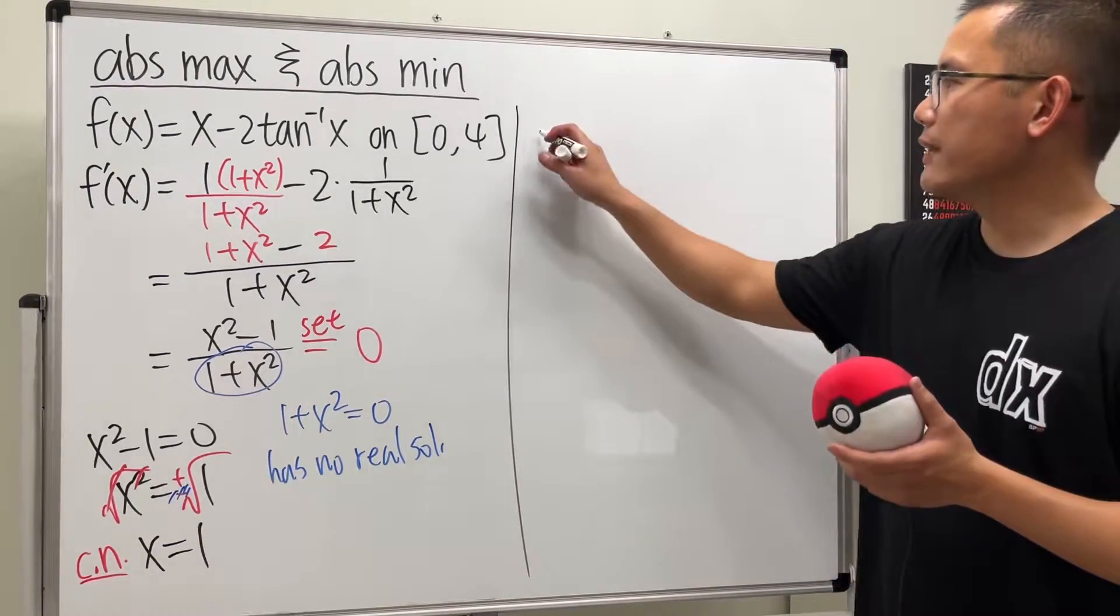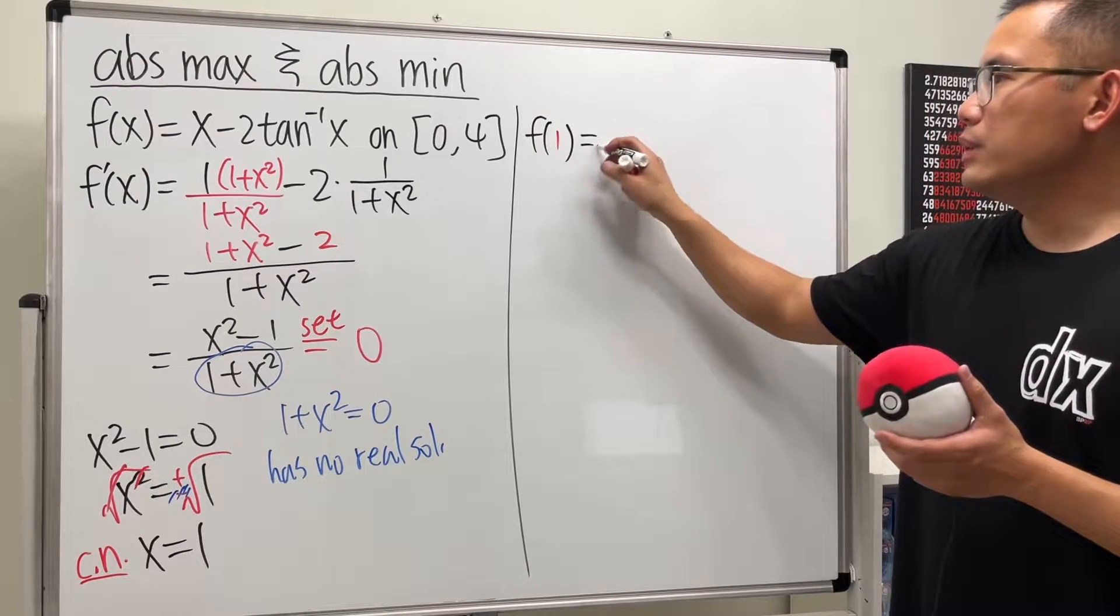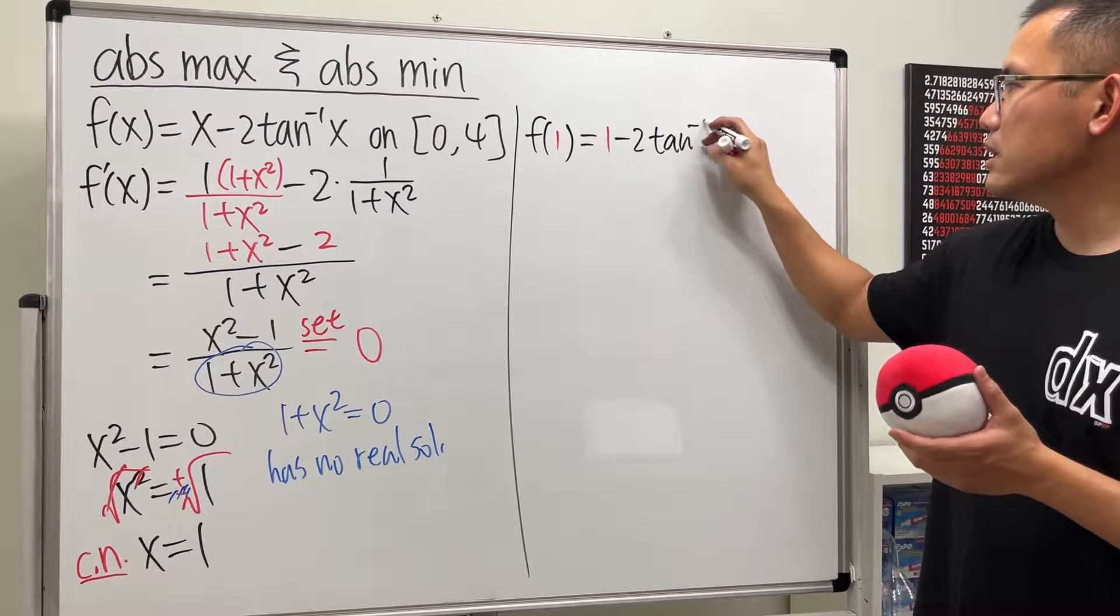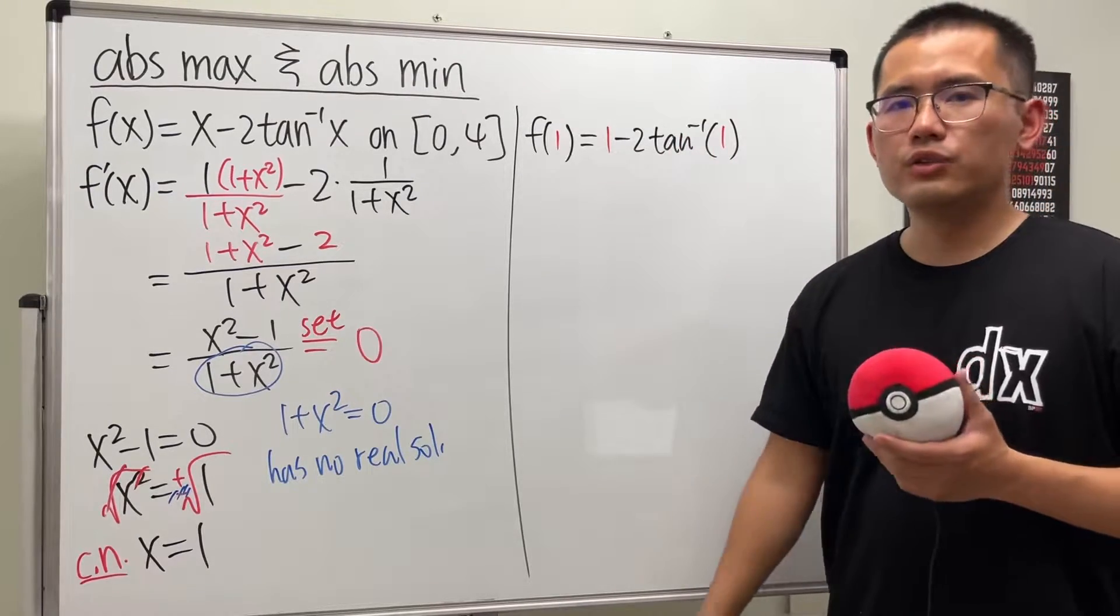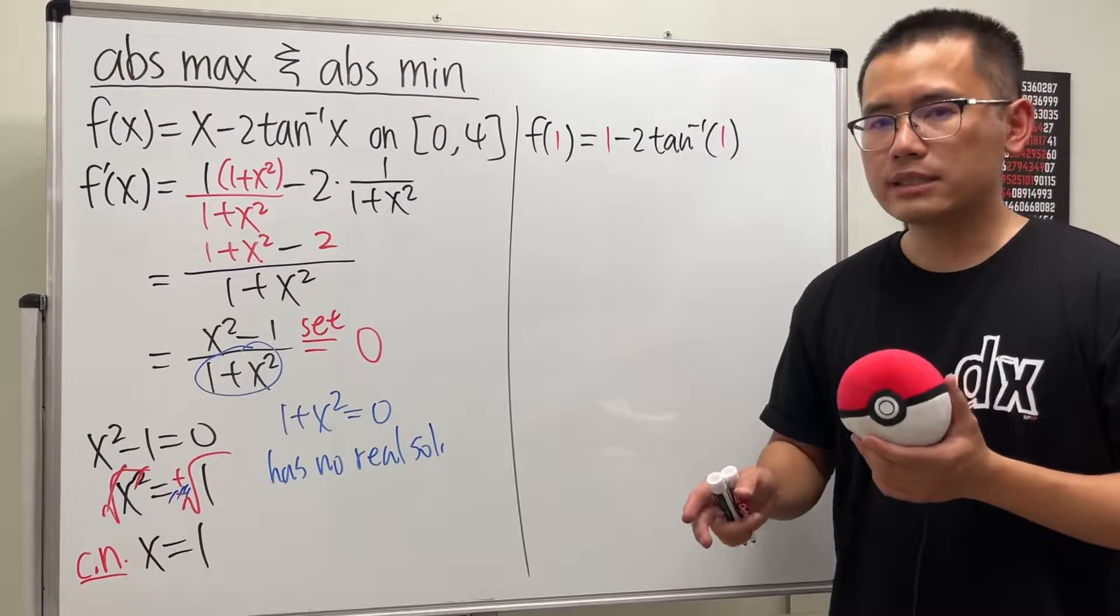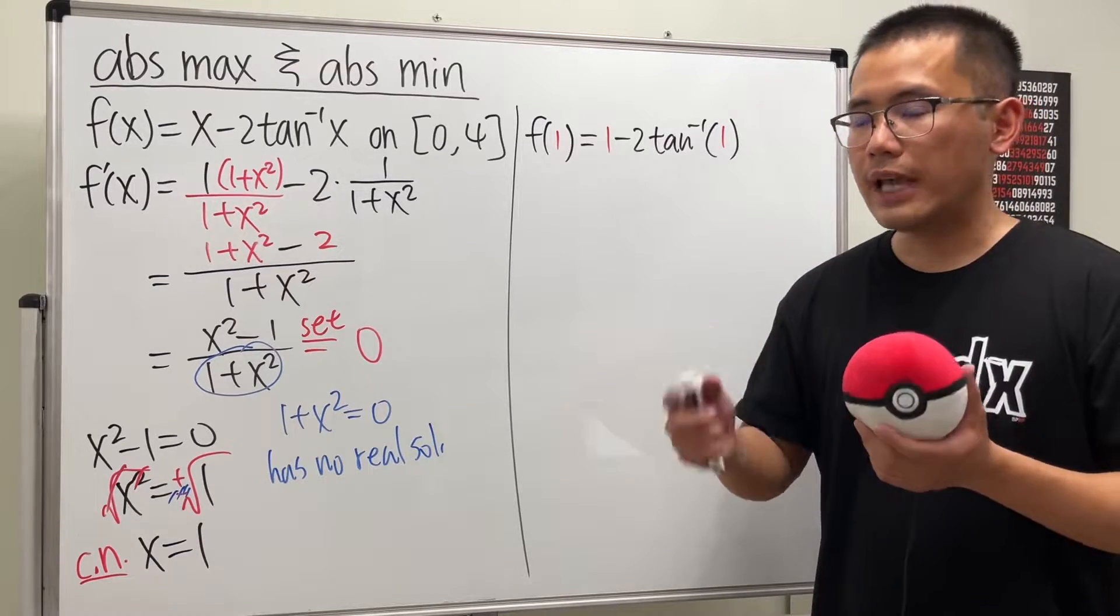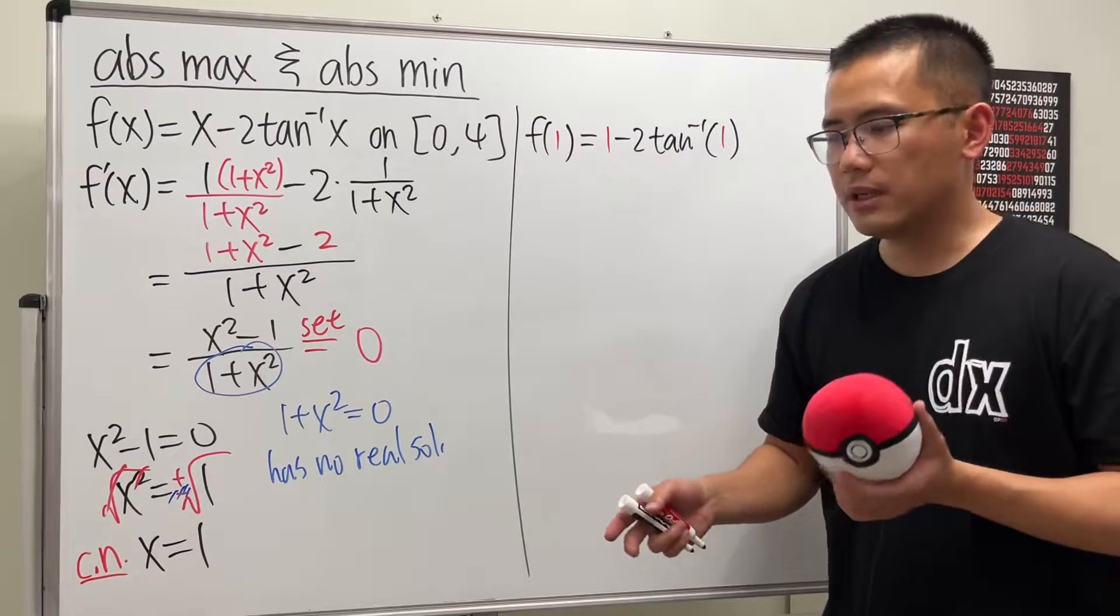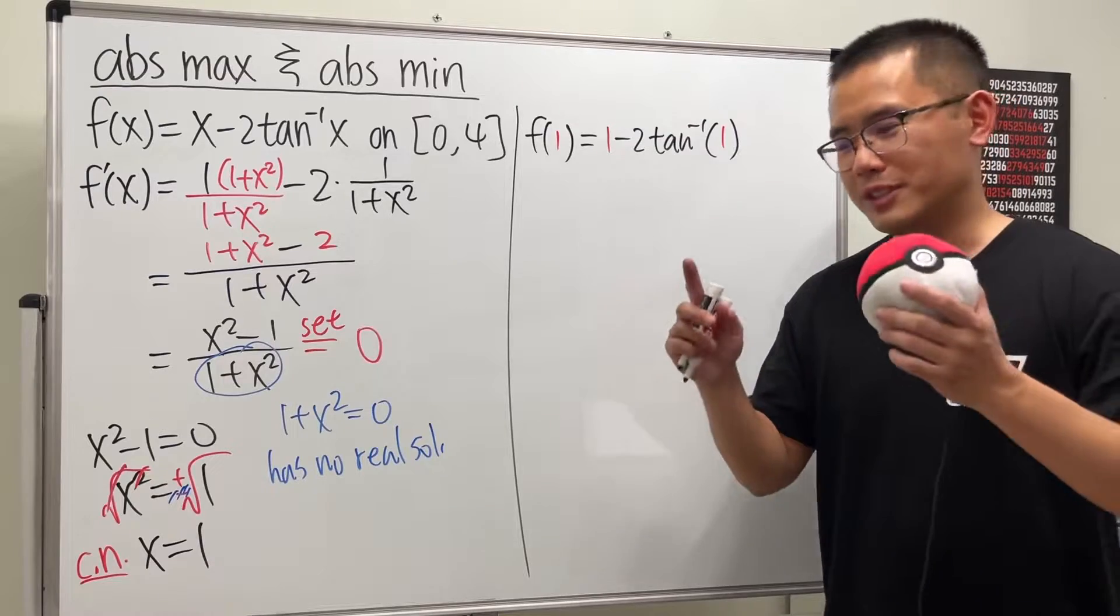Now we have f(1). This is equal to 1 minus 2 times inverse tangent of 1. How do we compute inverse tangent of 1? We have to ask ourselves, what's the first angle that will give us tangent being 1? And the answer is 45 degrees. But we are in calculus. We are all adults now. So we use radians, which is pi over 4.